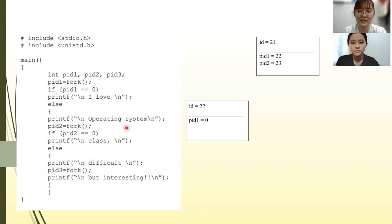Hence, at ID equals to 23, PID2 equals to 0, which means child process is created.